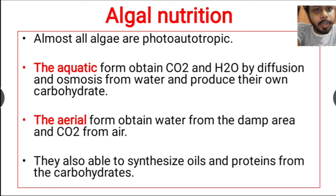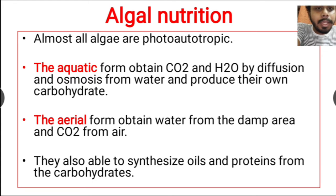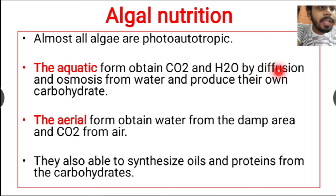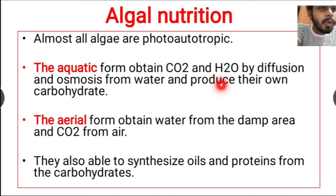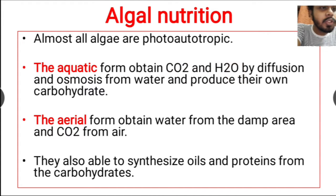The aquatic form of algae — those which grow in an aquatic environment, that is in marine water or in fresh water — obtain CO2 and H2O by diffusion and osmosis from the water, and produce their own carbohydrates.